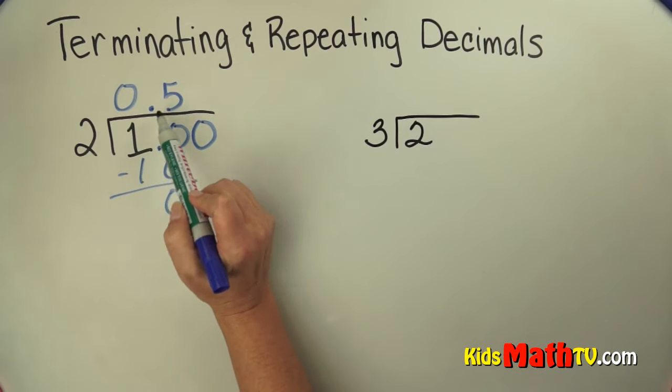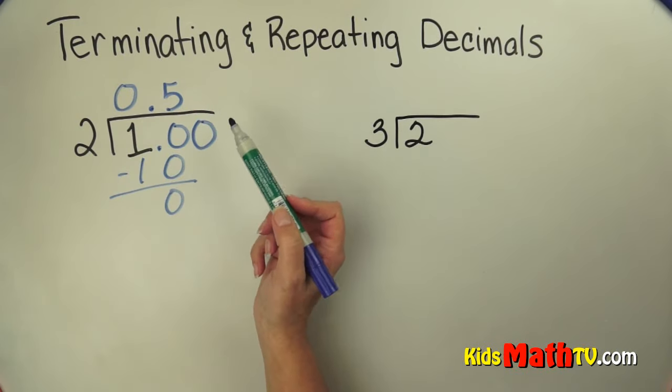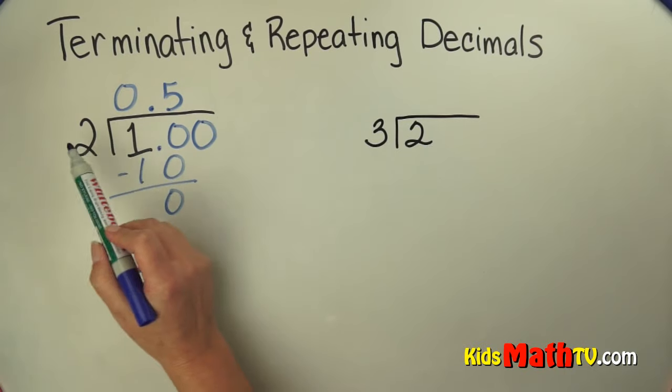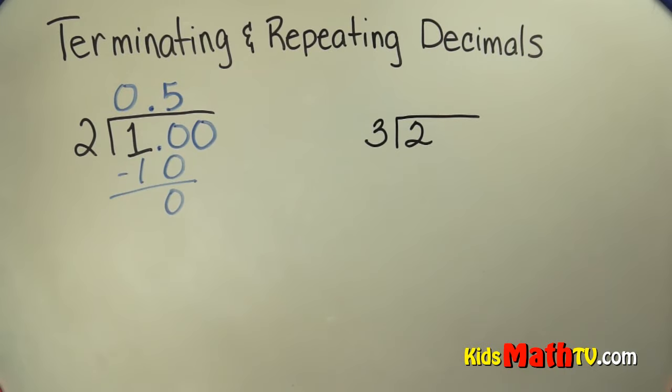So our answer is 0 and 5 tenths, or 1 half. So 1 divided by 2 is 1 half. That makes sense.